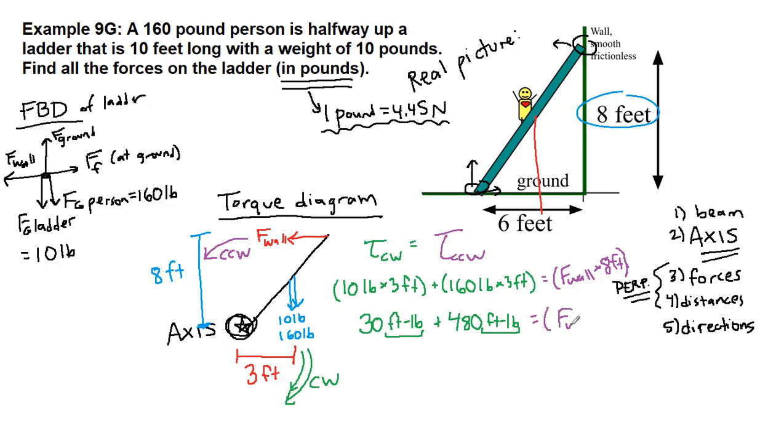So the unknown force of the wall times 8 feet, we can divide both sides by 8 feet, so this whole entire thing, which is really 510 foot-pounds, divided by 8 feet. We have 63.75, I'm just going to round that to 64 pounds, and that is the force of the wall on the ladder.